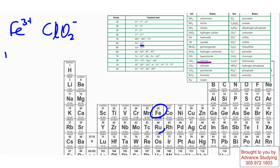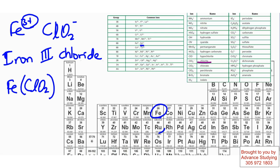So when I name this, this is just iron 3 chlorite. And when I make this into a formula unit, it is Fe parenthesis ClO2 close parenthesis, and the 3 from iron goes to chlorite. And 3 here.